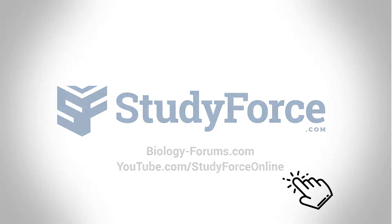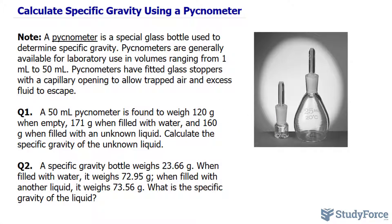In this quick lesson, we'll go through a couple of examples on how to calculate specific gravity using a pycnometer. A pycnometer is a special glass bottle used to determine specific gravity.